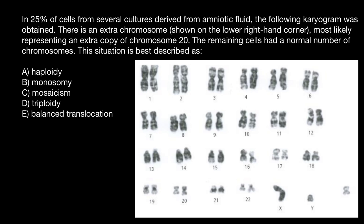Hello and welcome to Nikolai's Genetics Lessons. Today's problem is: in 25% of cells from several cultures derived from the amniotic fluid, the following karyogram was obtained. There is an extra chromosome shown on the lower right-hand corner, most likely representing an extra copy of chromosome 20. The remaining cells had a normal number of chromosomes. This situation is best described as one of the following answers.